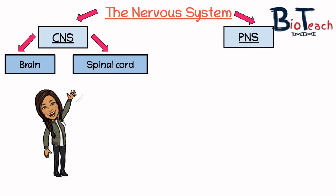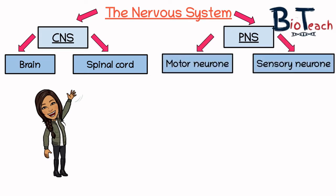The peripheral nervous system is governed by the actions of the motor and sensory neurons. The motor neurons are there for movement, transporting messages from the central nervous system to the muscles and glands, which are known as the effectors. The sensory neurons function to send signals to the CNS to initiate a response, and they are essentially associated with our five senses.